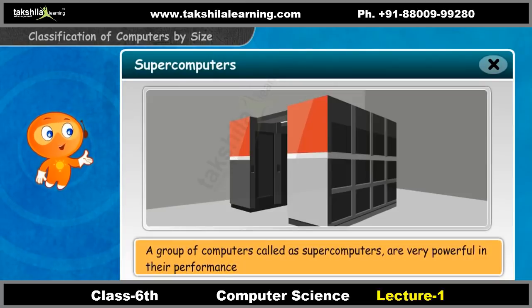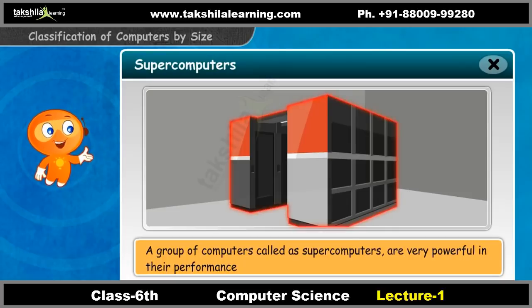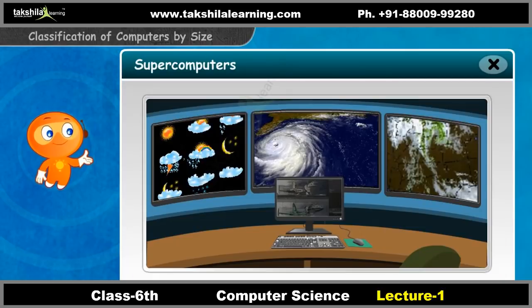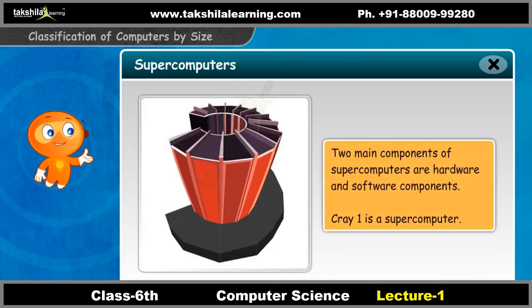A group of computers called supercomputers are very powerful in their performance. They are the biggest and the most powerful. They cover a space as big as a room. Governments and industries use them for numeric calculations such as weather forecasting. Supercomputers consist of two main components: hardware and software. CrayOne is a supercomputer.